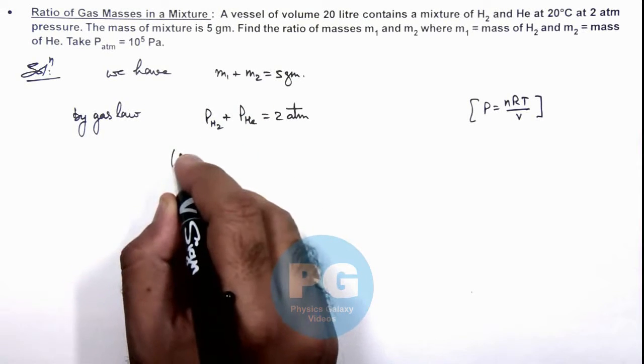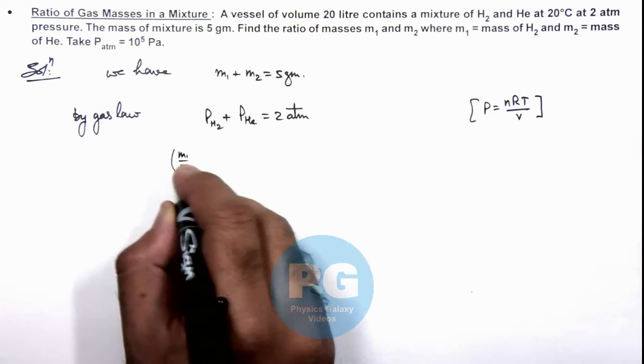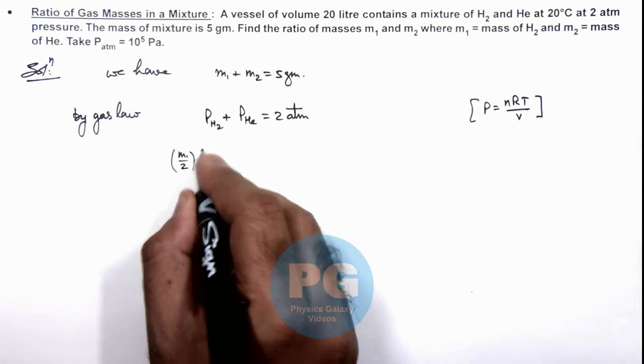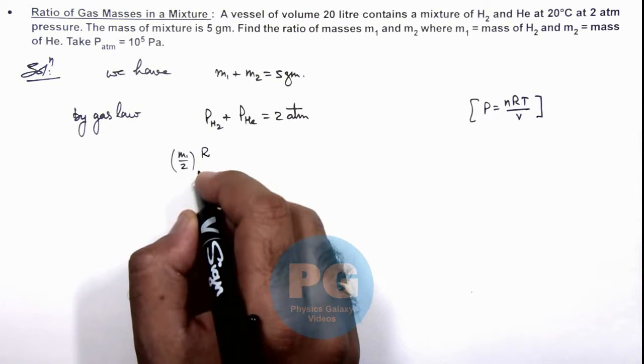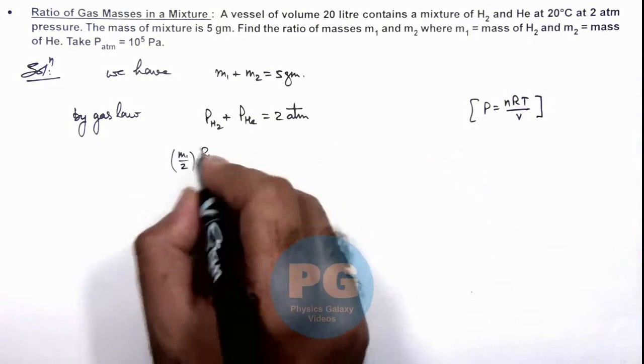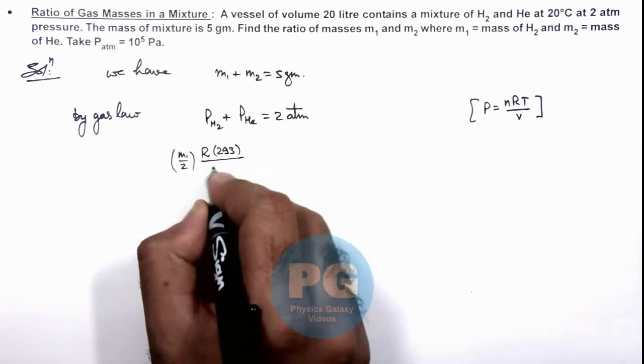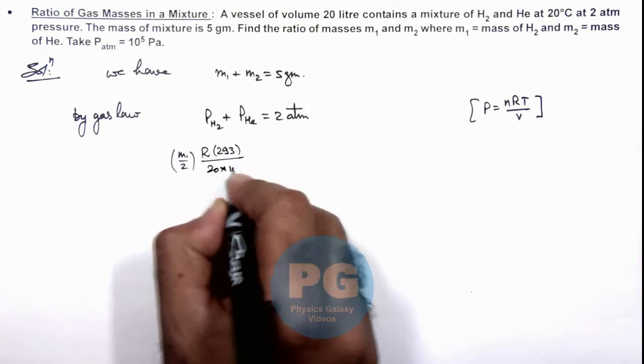So this hydrogen pressure we can write as number of hydrogen, can be written as m1 divided by 2 number of hydrogen moles, multiplied by r. Temperature is 20 degree centigrade so we can use 293 kelvin divided by volume is 20 into 10 to power minus 3.